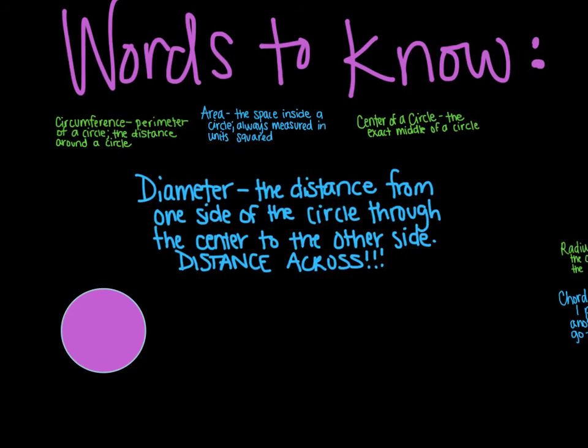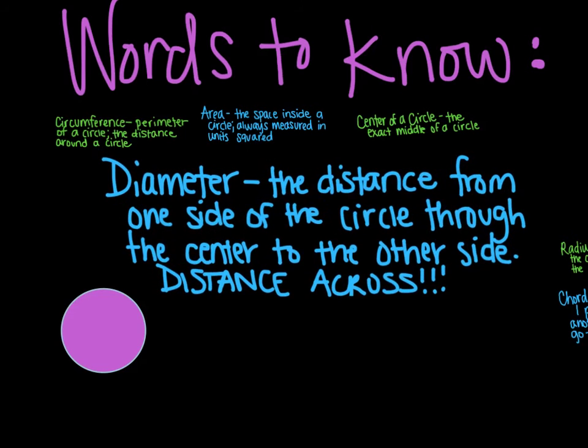Then diameter is the distance from one side of the circle through the center to the other side. So if this is my center of my circle, the diameter then would be the line going from one side through the center to the other side. And there's tons of different diameters. It can be any of these as long as it goes one side through the center to the other. In other words, it is the distance across your circle.